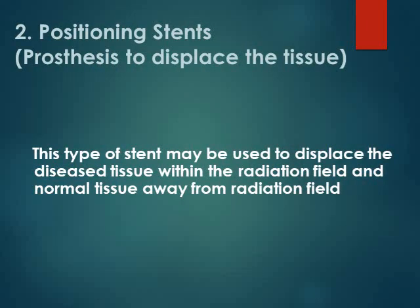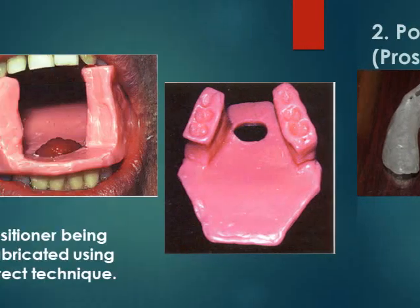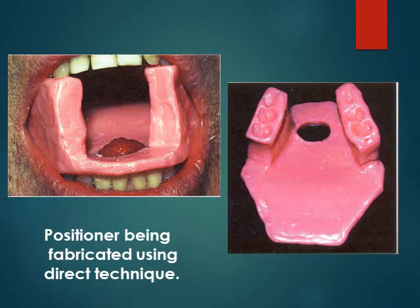Positioning stents or prostheses are used to displace diseased tissue within the radiation field and normal tissue away from the radiation field. Here are examples of positioning stents used to displace the tongue. Positioning devices are made in wax intraorally — two occlusion rims of wax on which the patient bites at maximum opening position. A horizontal shelf of wax is placed in between to lower the tongue, which is the tissue receiving radiation, while also opening the bite maximally to save part of the parotid gland from the effect of radiation.